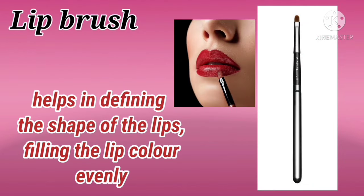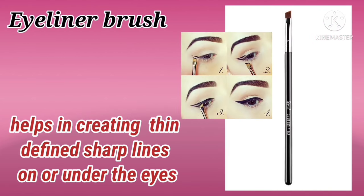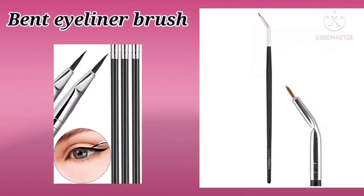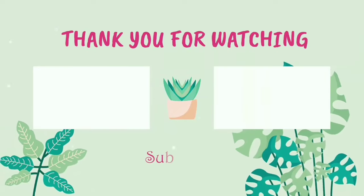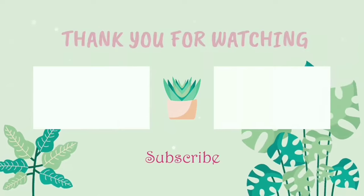The next one is the eyeliner brush — it helps in creating thin, defined, sharp lines on and under the eye. The next one is the bent eyeliner brush — इस brush का यूज आप eyeliner के लिए कर सकते है। Hope this video is helpful for you, thanks for watching!